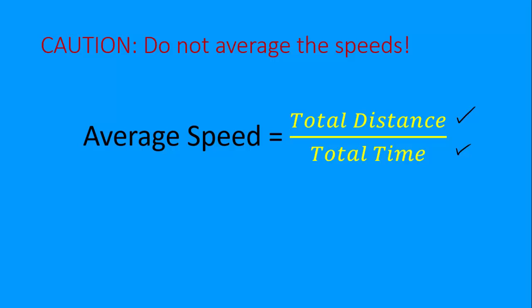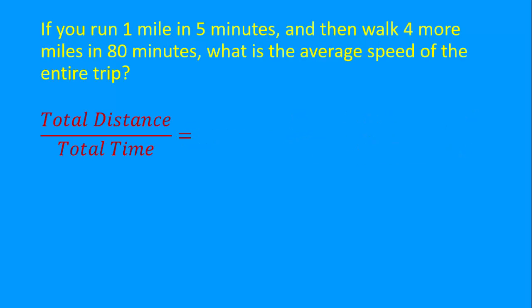So let's look at that problem again. The total distance is one mile plus four more miles, and the total time is simply five minutes plus eighty minutes. So all together we've got five eighty-fifths miles per minute.